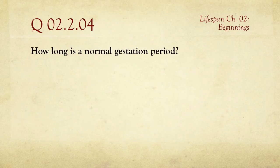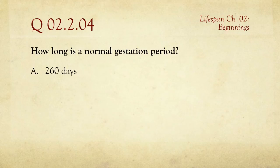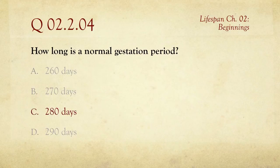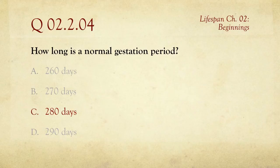Number four: how long is a normal gestation period? The choices are 260, 270, 280, or 290 days. It's easier to think about this in terms of weeks — 40 weeks is normal. 40 times 7 gives you 280 days, and that's the normal gestation period. Coming two weeks early is still within the normal realm and is not considered premature.